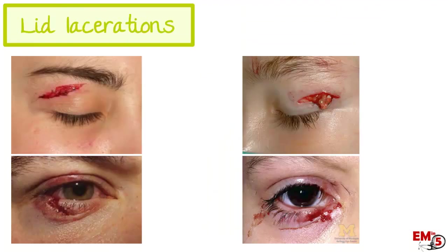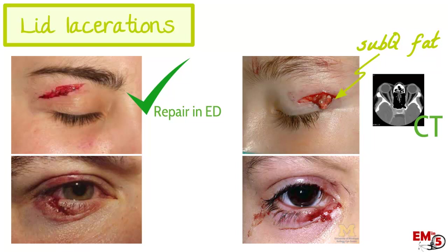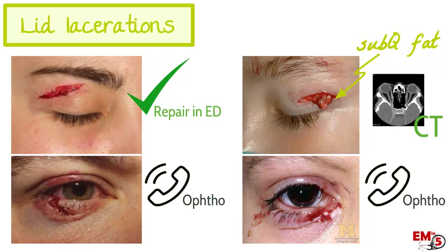For lid lacerations, the major decision point is whether you can repair them in the ED or need to call ophthalmology. A simple laceration can be repaired in the emergency room. If subcutaneous fat is coming through, that's concerning because it means there's been penetration into the orbit — you need further investigation to rule out globe injury or other serious orbital injury. Any significant deformity to the lids warrants an ophthalmology call, especially if it involves the medial canthus, as you might need stenting of the lacrimal duct.